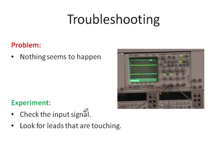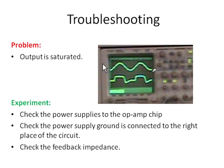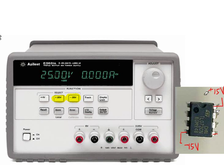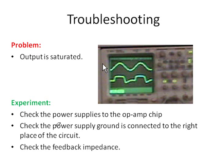Let's go through the steps to debug a circuit. First, check the input signal. Then make sure there are no leads touching each other. If the input is correct but the output is saturated, check the power supplies to the op amp chip — make sure both positive 15 and negative 15 volt supplies are set correctly. The common ground should be connected correctly, and all component values including feedback resistance should be correct. Thank you for listening.